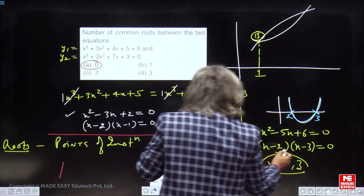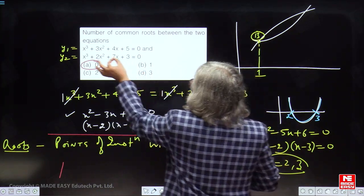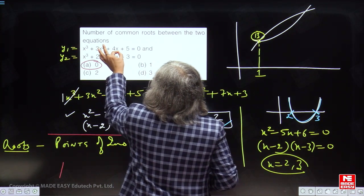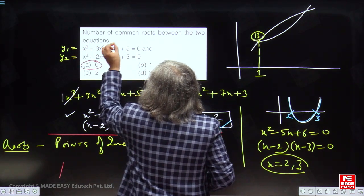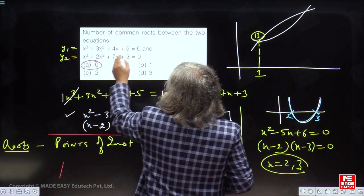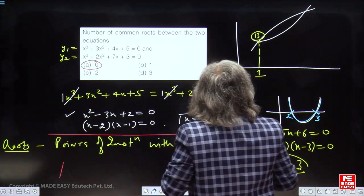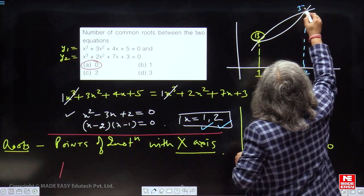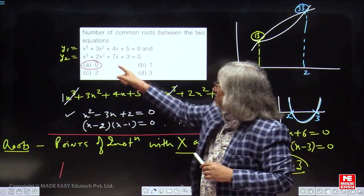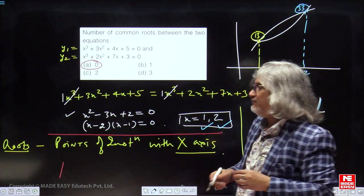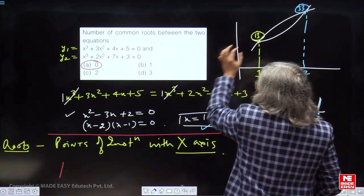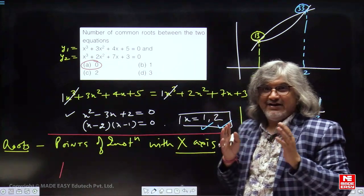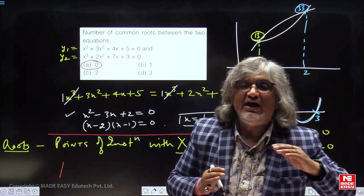In a very similar way. Let us put x equal to 2. So 2³ will become 8, 3 into 2 squared will become 12, 4 into 2 will become 8 plus 5. 8 plus 12 plus 8 plus 5, 20, 28 and 5, 33. So, this value will come out to be 33. So, at x equal to 2, both functions are yielding me a value 33. It will also come out to be 33. If we put x equal to 1 in both of them, it is coming out to be 13. If we put x equal to 2 in both of them, it will come out to be 33. That means the curves are intersecting well above x-axis.